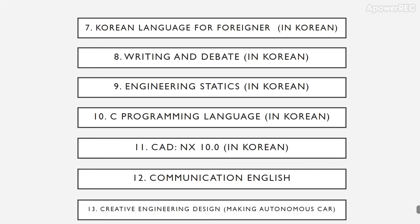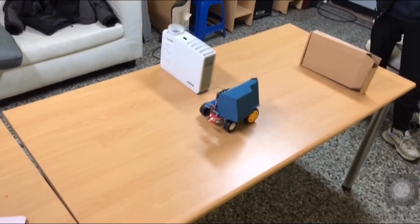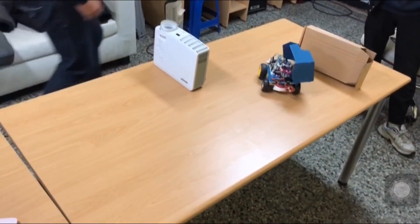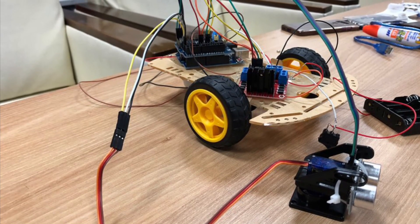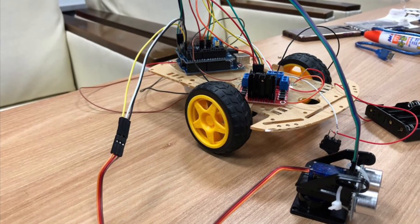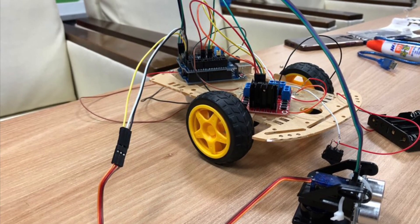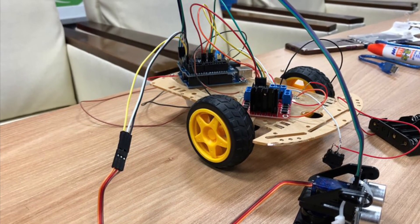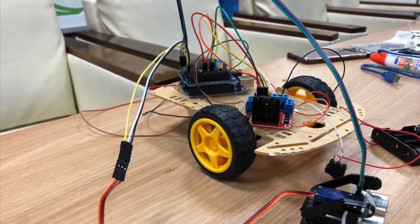We also took Communication in English. Lastly, we had Creative Engineering Design, which was taught in English. We divided into groups, and the project options were to make an autonomous car, an auto shooter that shoots ping pong balls, or an autonomous boat. Our team chose the autonomous car. At the end of the semester we had a big conference where all five engineering departments participated.